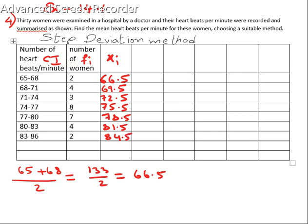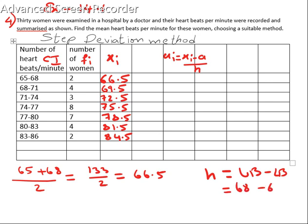These are the mid values. Next column we will have ui. ui is equal to xi minus a by h. Now what is h? h is nothing but the height of the class interval. To find out the height of the class interval, h is equal to upper boundary minus lower boundary, that implies 68 minus 65, so height h is equal to 3.